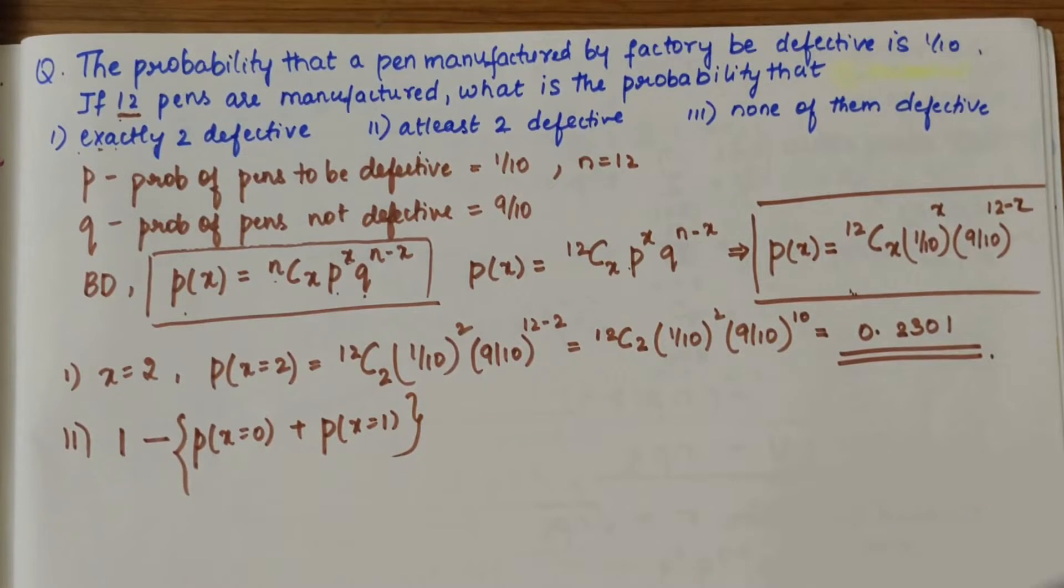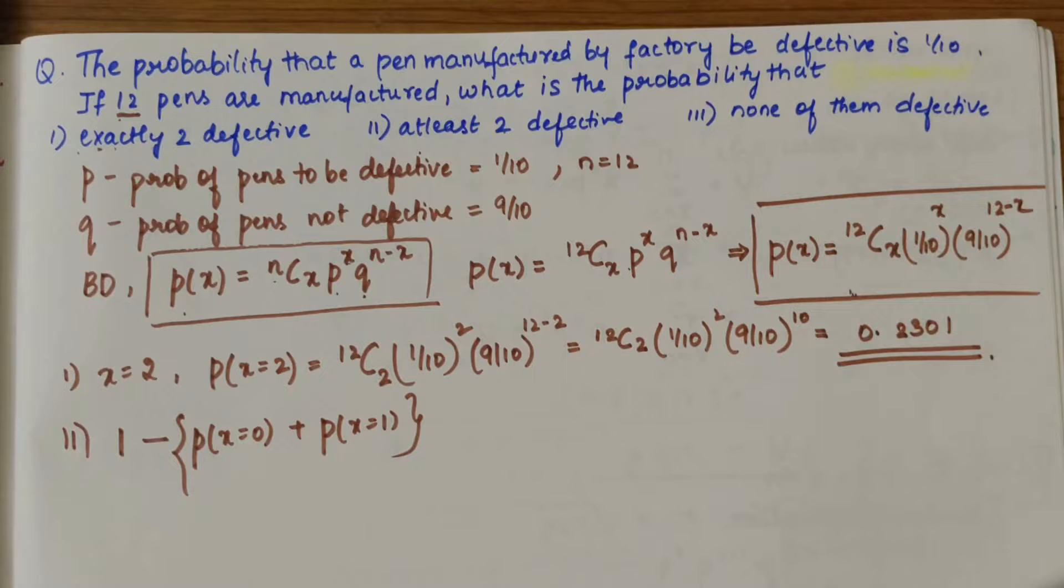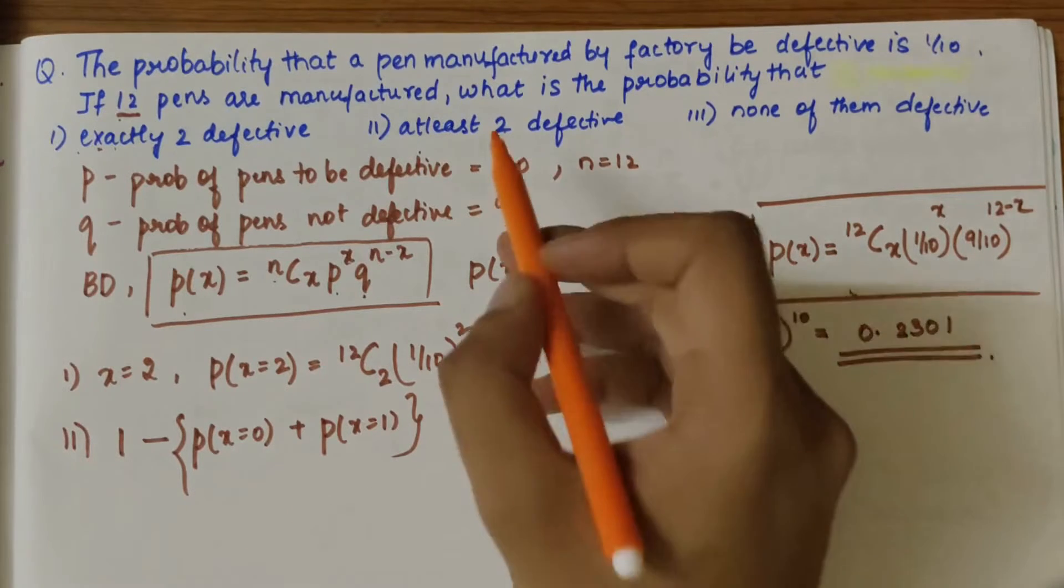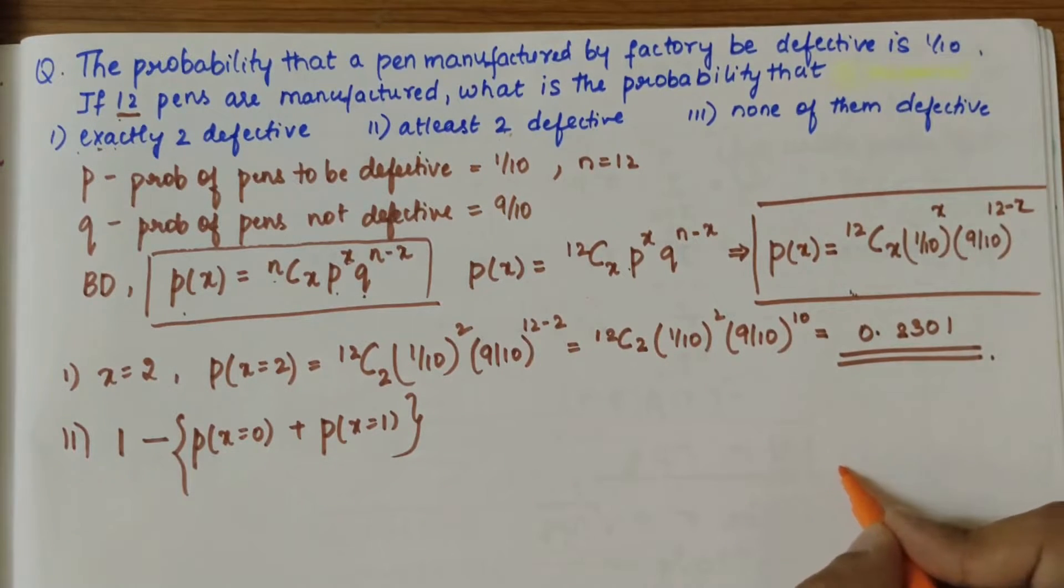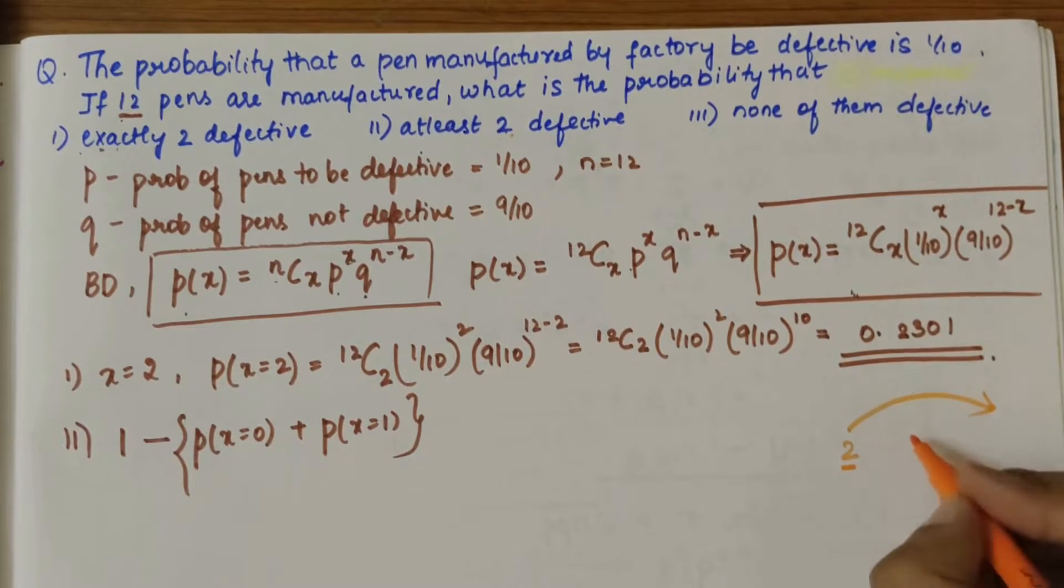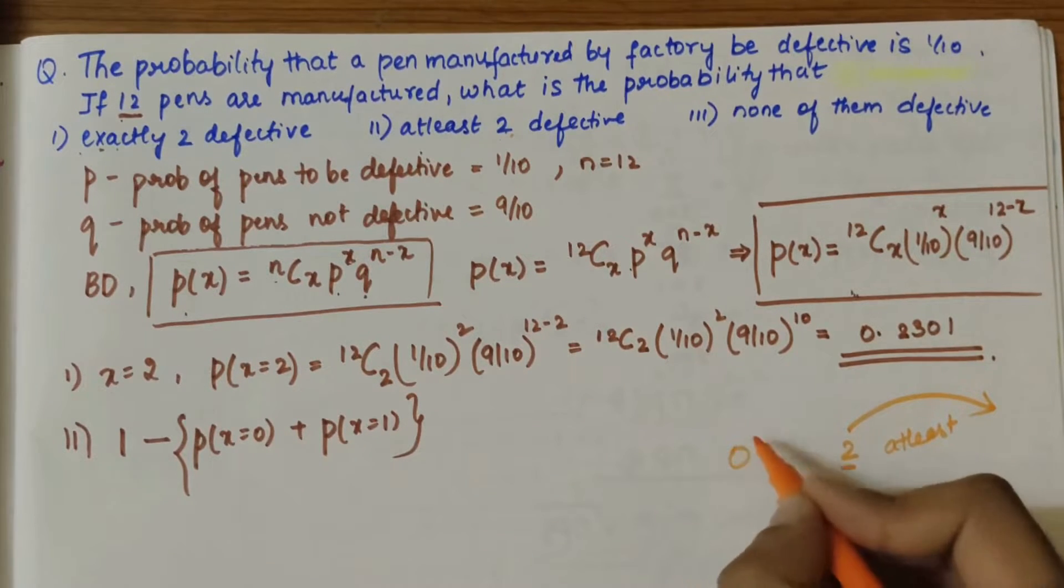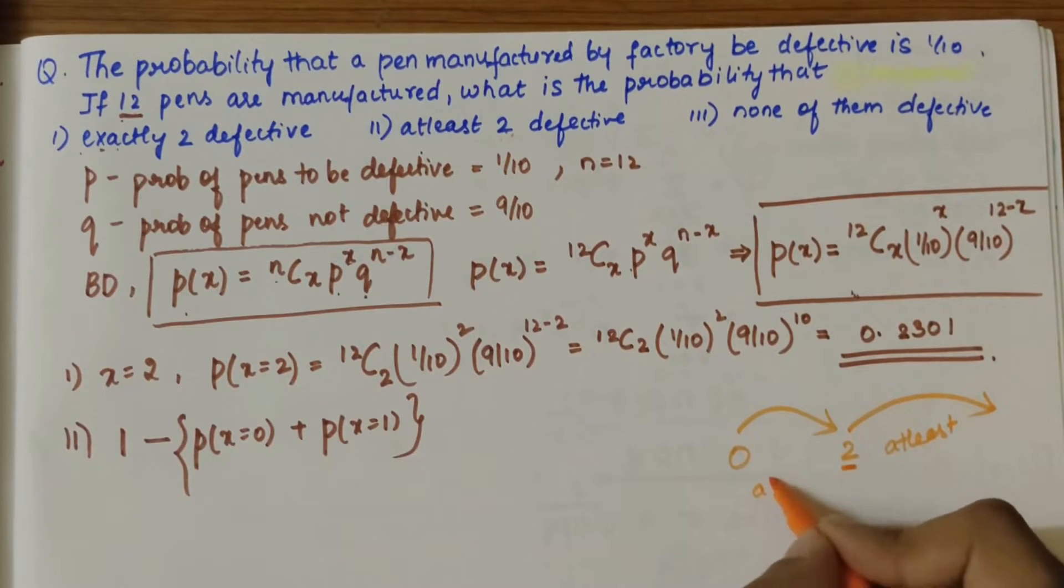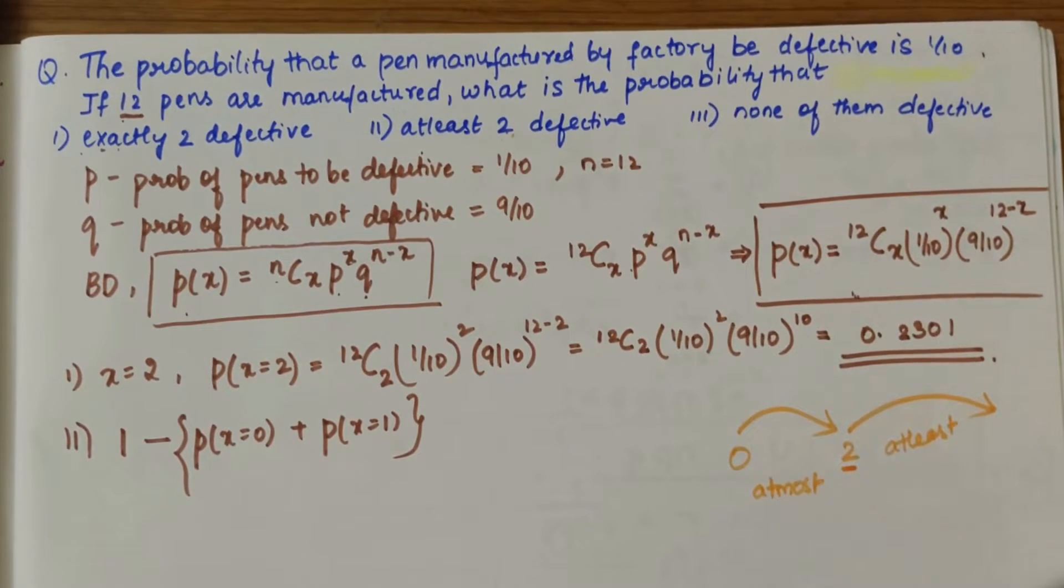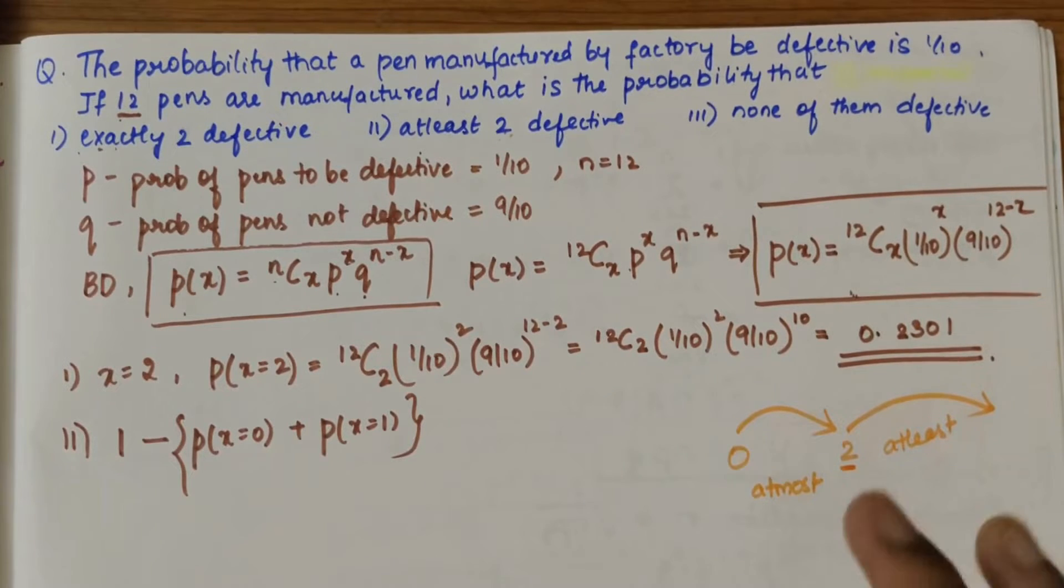One thing to understand between at least and at most is that at least refers to—here they have given at least two—at least two means minimum two or more. This is at least. At most would be from zero to two.